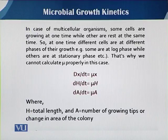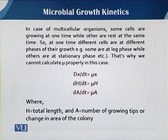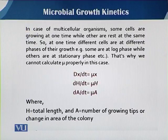We say that dx/dt is equal to mu·x, while dh/dt — the change in height divided by the change in time — equals mu·h. Sometimes growth only happens in an area, so we can express dA/dt equal to mu·A, where h is the total length and A is the number of growing tips or the change in area of the colony. By using these equations, we can easily calculate mu.